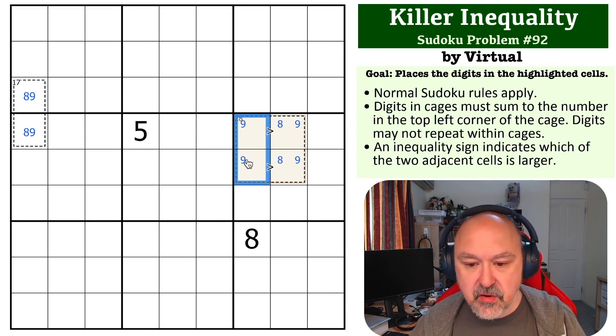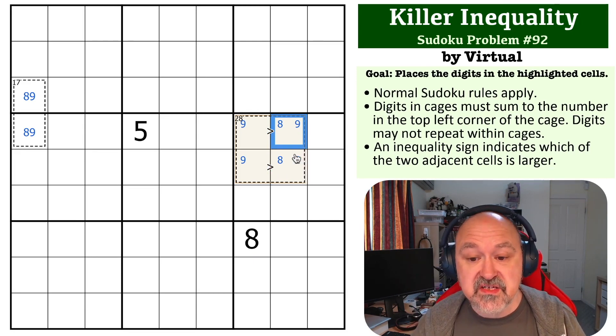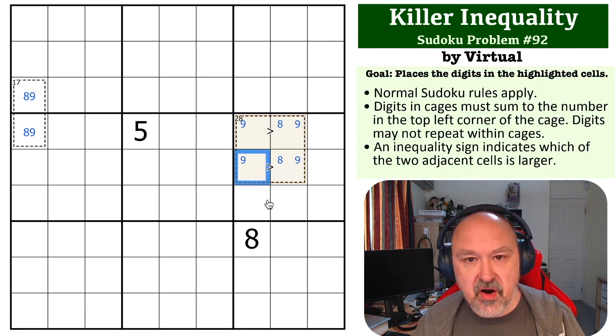Now, we can't put an 8 on this side because of the given 8, so there must be an 8 over here on the side that is lower. Because of that, wherever we put the 8 on the side that is lower, there must be a 9 higher than it.